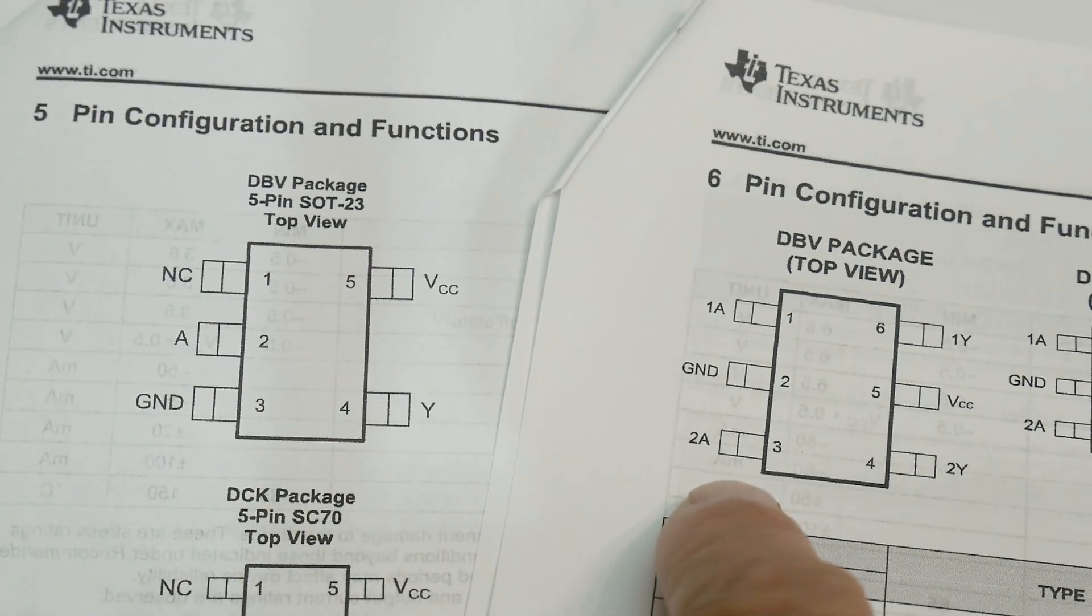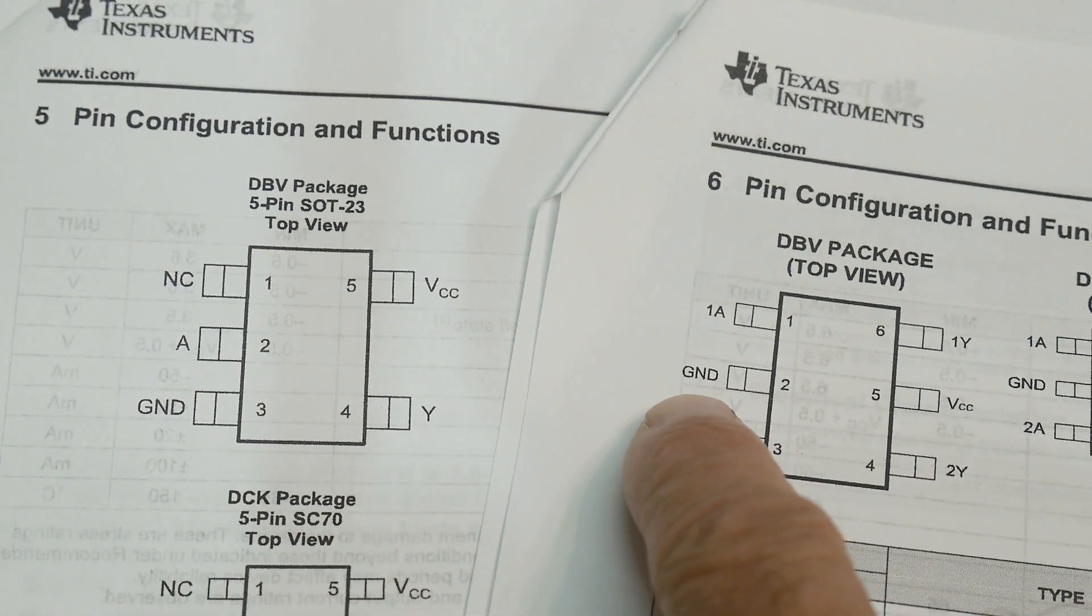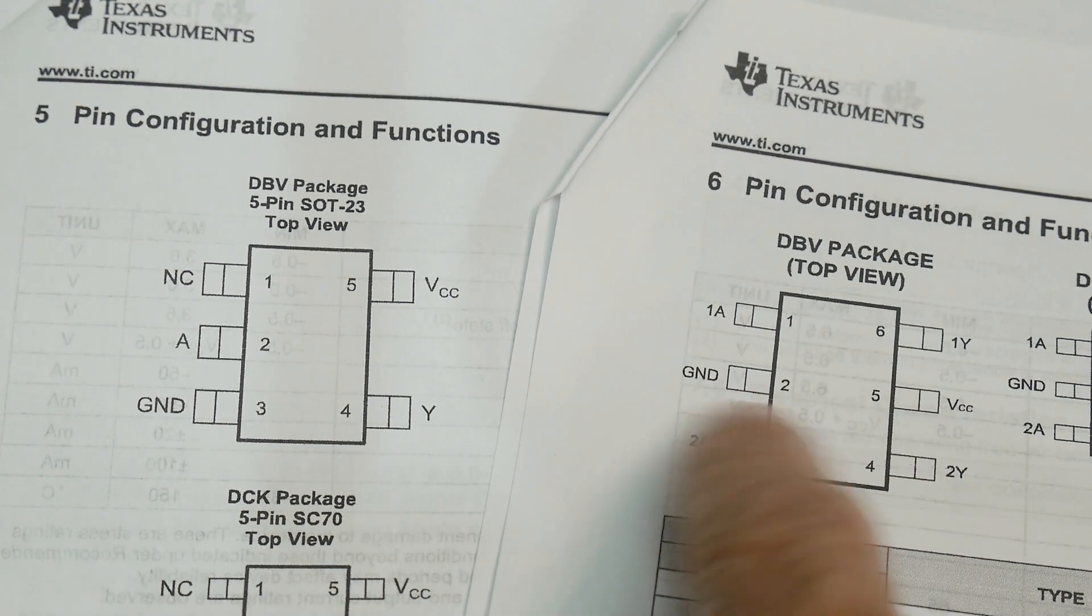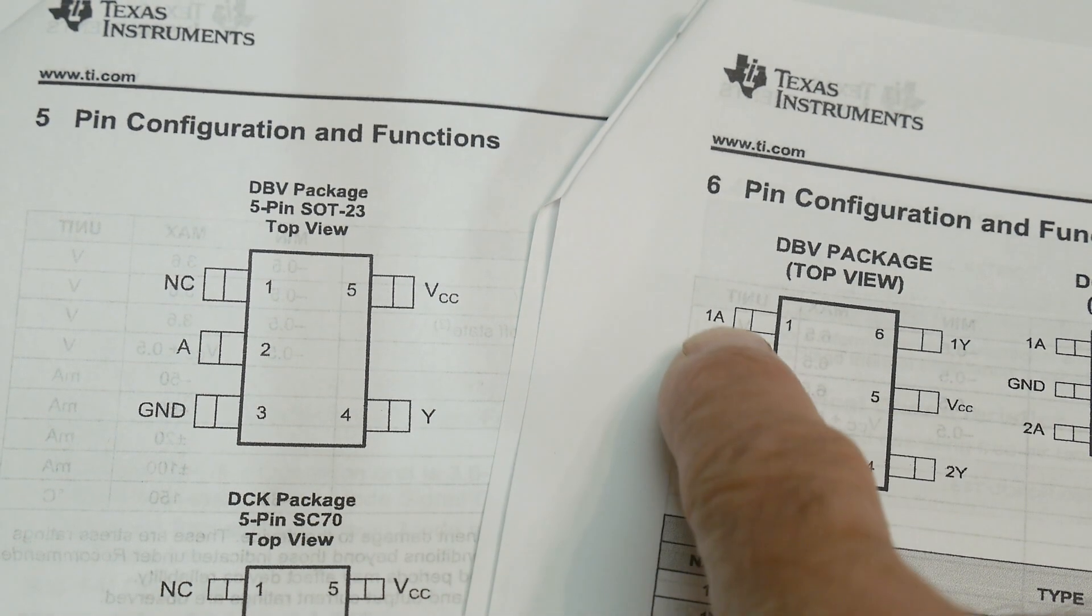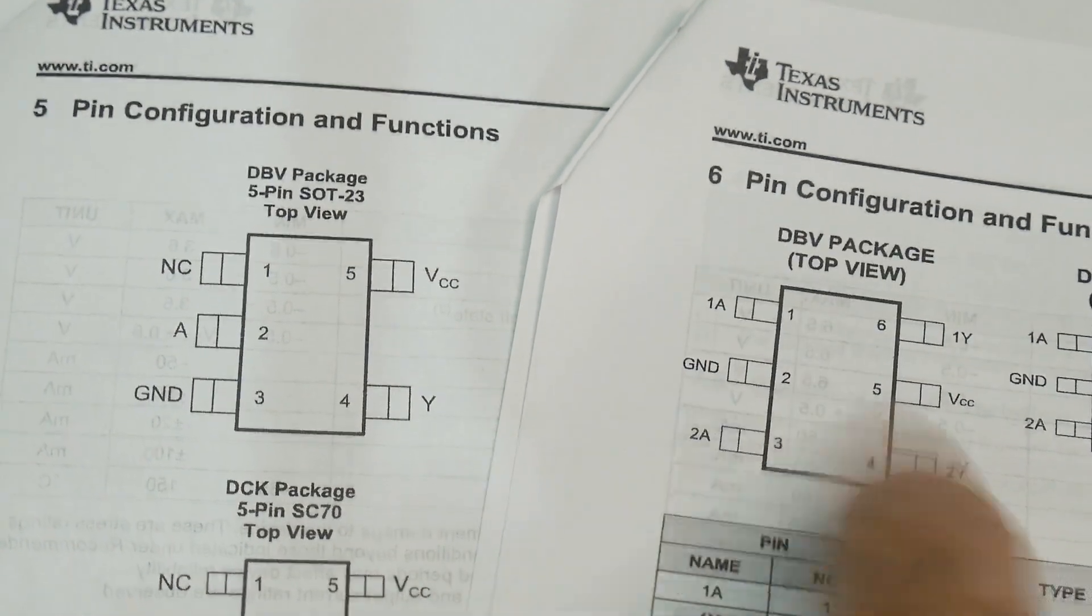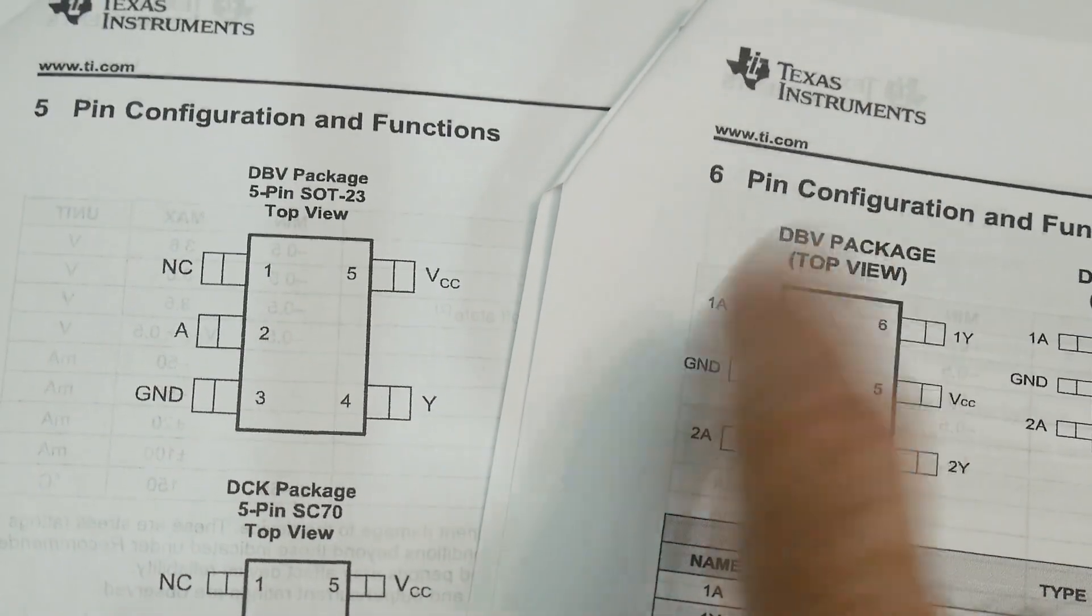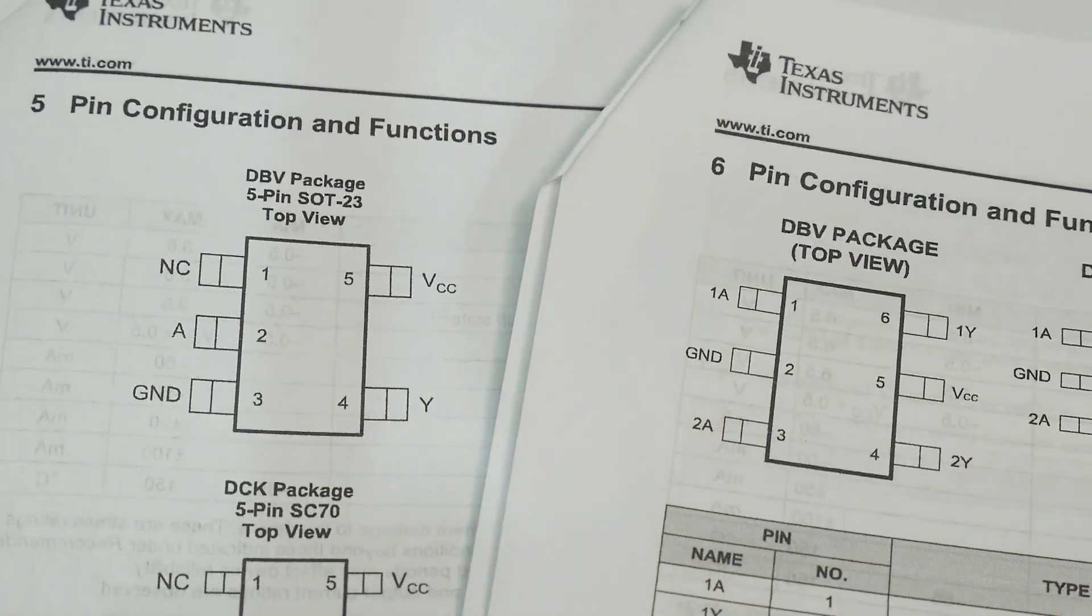So let's take a look at the other part, and you'll see it's much, much different. We have power and ground on five and two, and then one, six, and three, four. Alright, so we need to rewire my protoboard and try this one out.